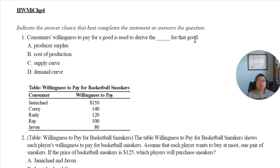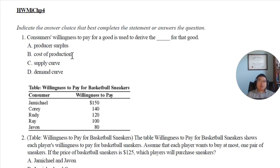Let's work on homework four, this is the first part, question one to question five. This chapter is about consumer and producer surplus. Let's look at question one: a consumer's willingness to pay for a good is used to derive the demand curve for that good. For this chapter, we want to have the consumer surplus, which comes from this demand curve.